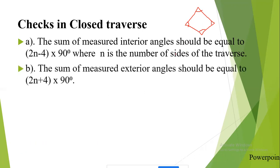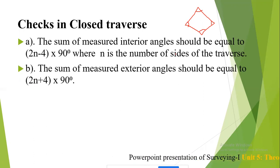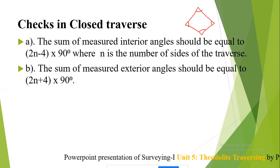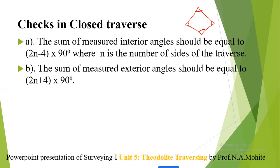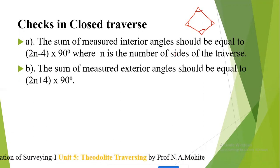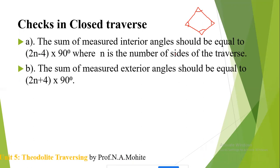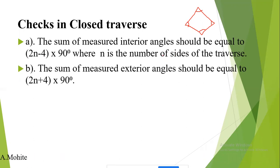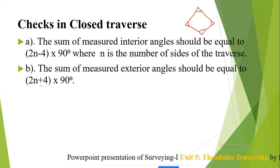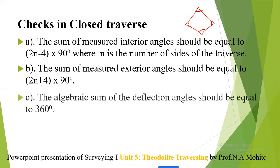The second check: the sum of the measured exterior angles should be equal to (2n + 4) × 90°. Similarly, when measuring the exterior angles, their summation should come out to be (2n + 4) × 90°.